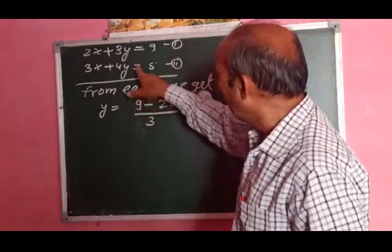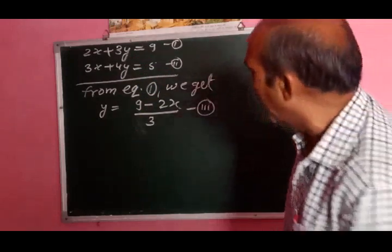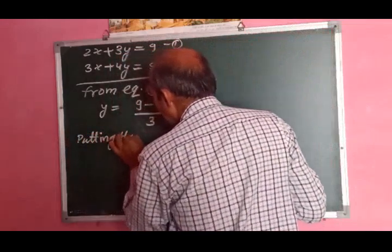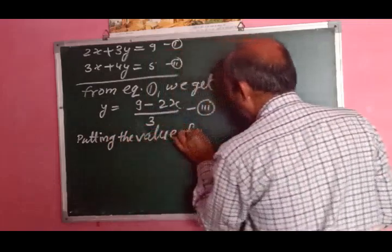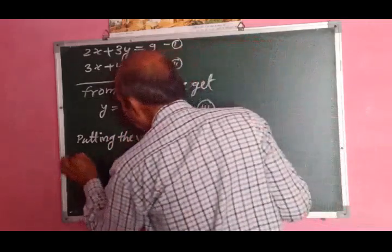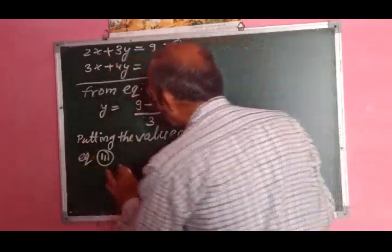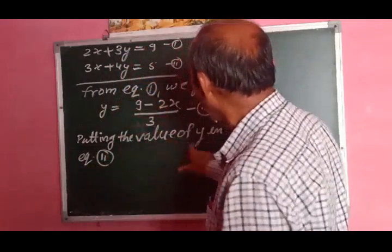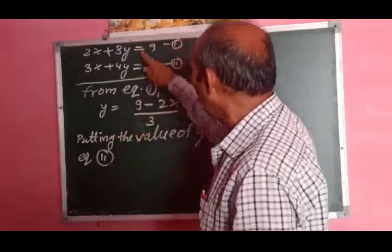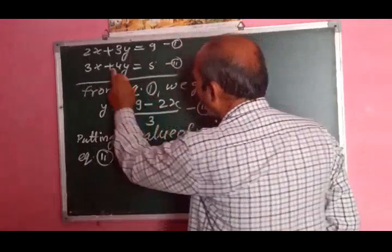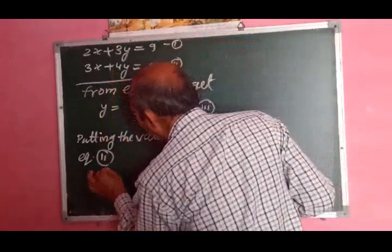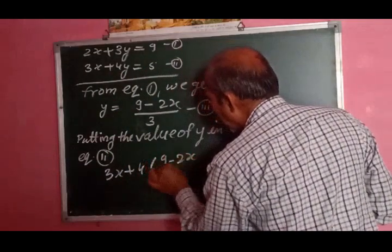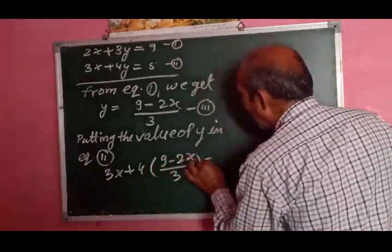अब इस y की value को equation second में put करेंगे. Putting the value of y in equation second: 3x + 4 × (9 - 2x)/3 = 5. 4 का multiply numerator में होगा, तो 3x + (36 - 8x)/3 = 5.